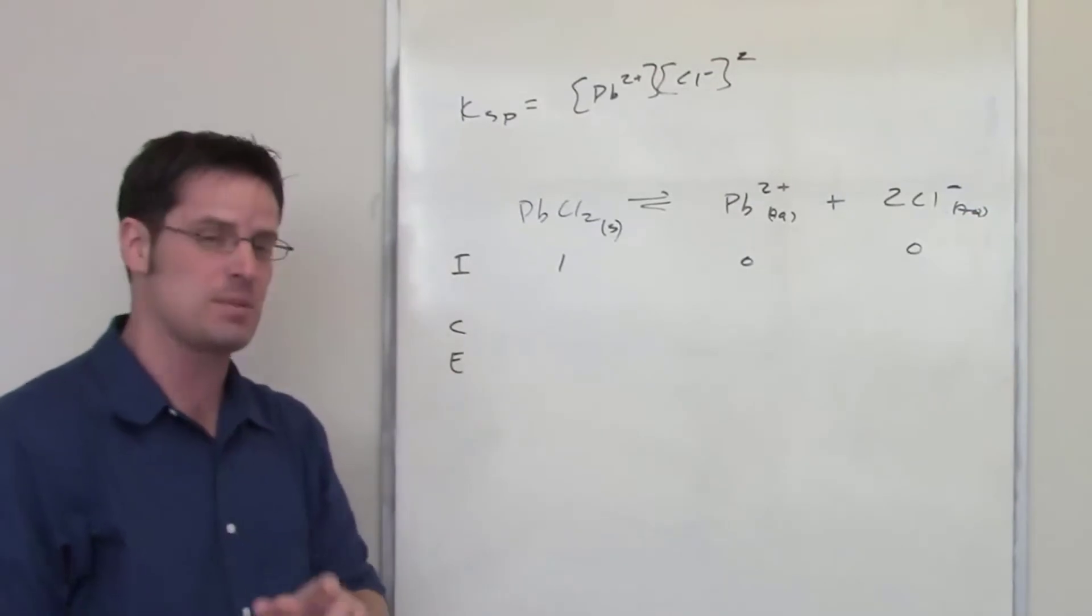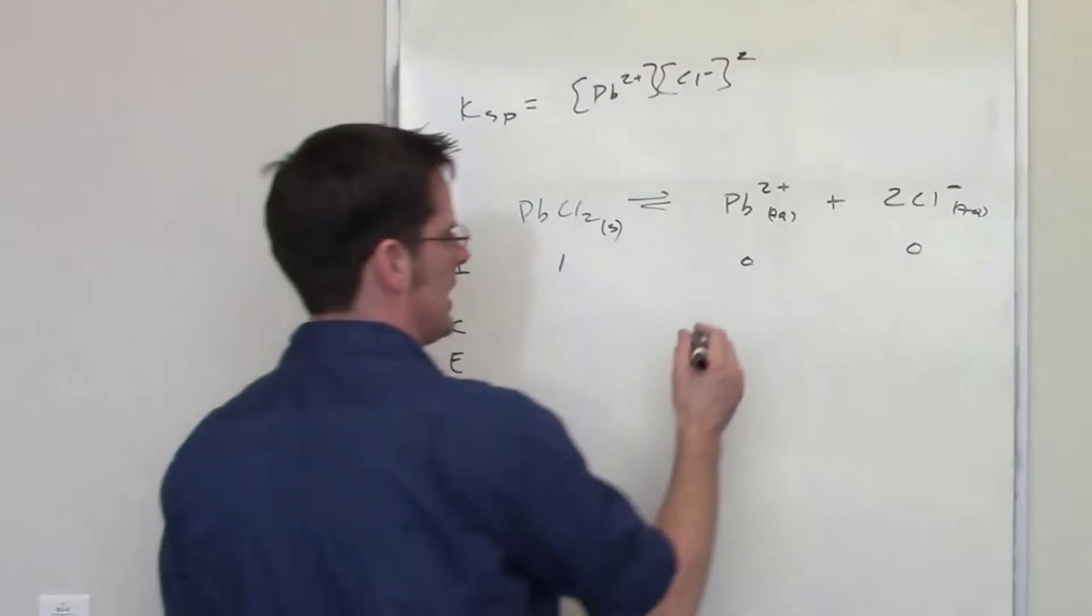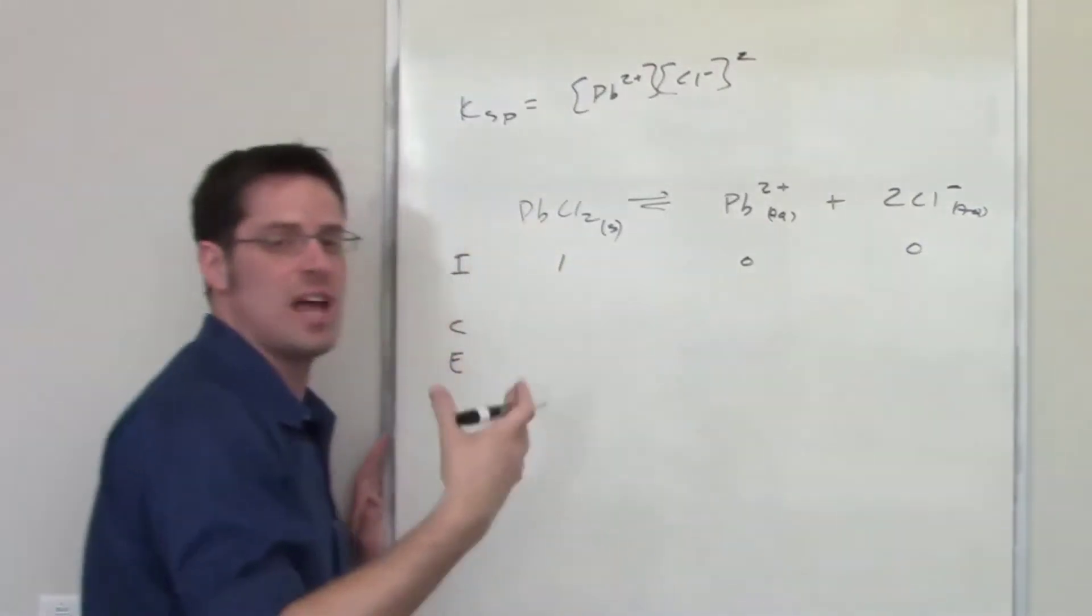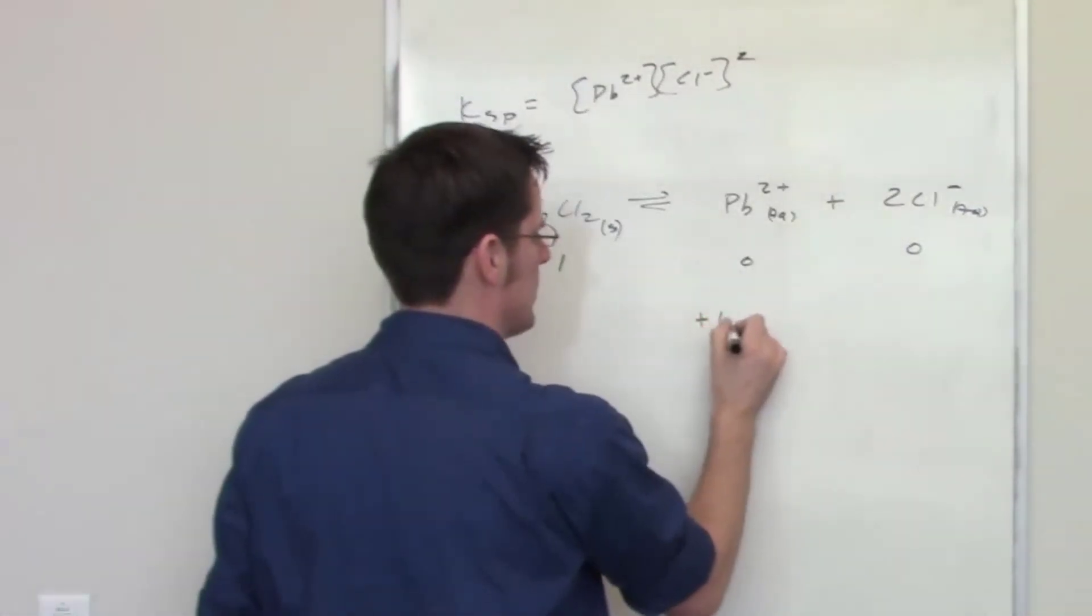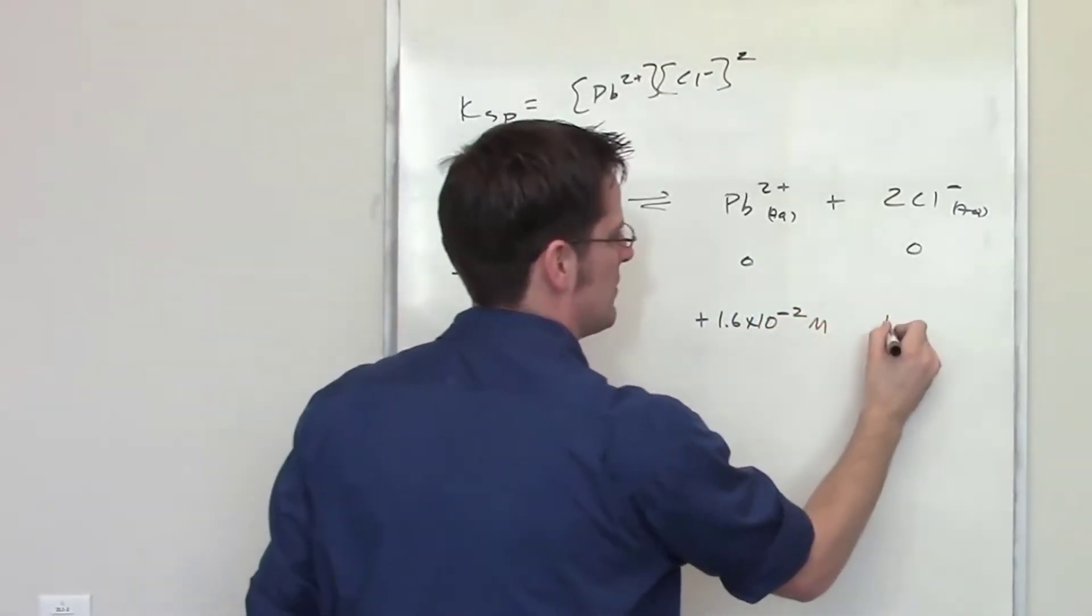That solubility amount is the amount by which each of these increases as we reach equilibrium. So I'm going to write down 1.6 times 10 to the negative 2 molar.